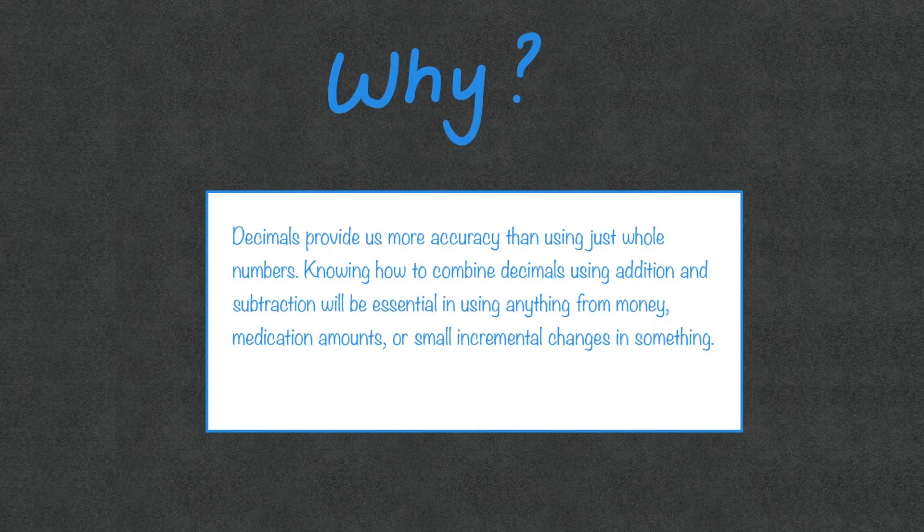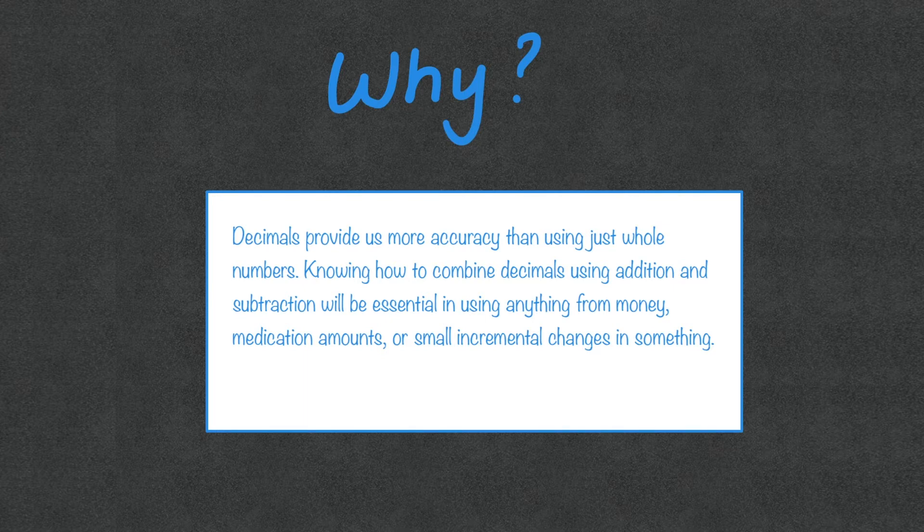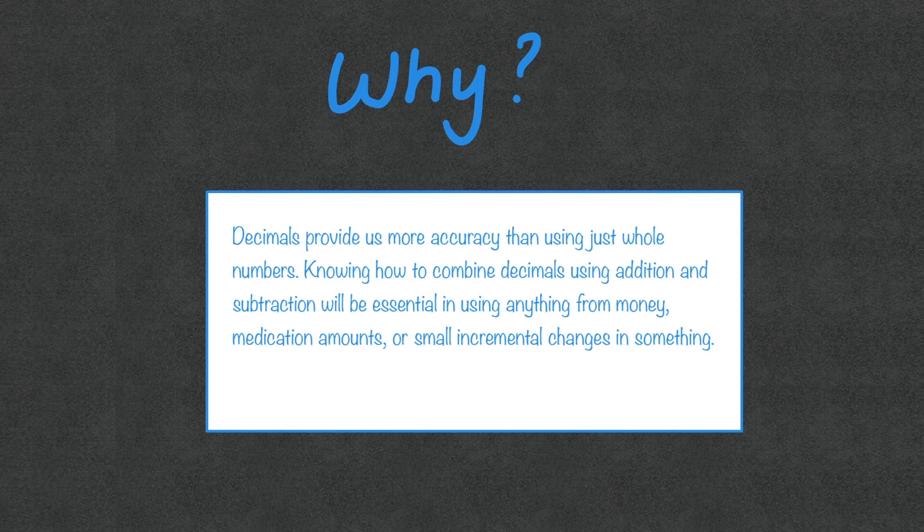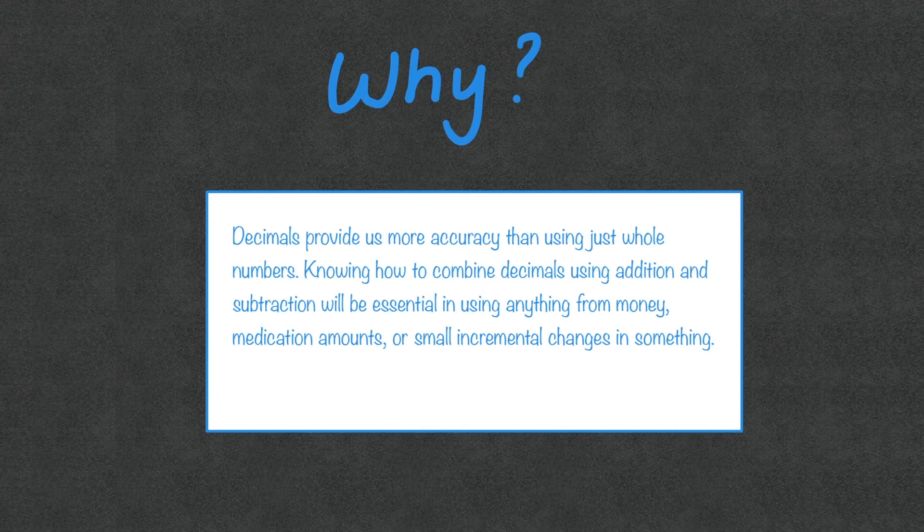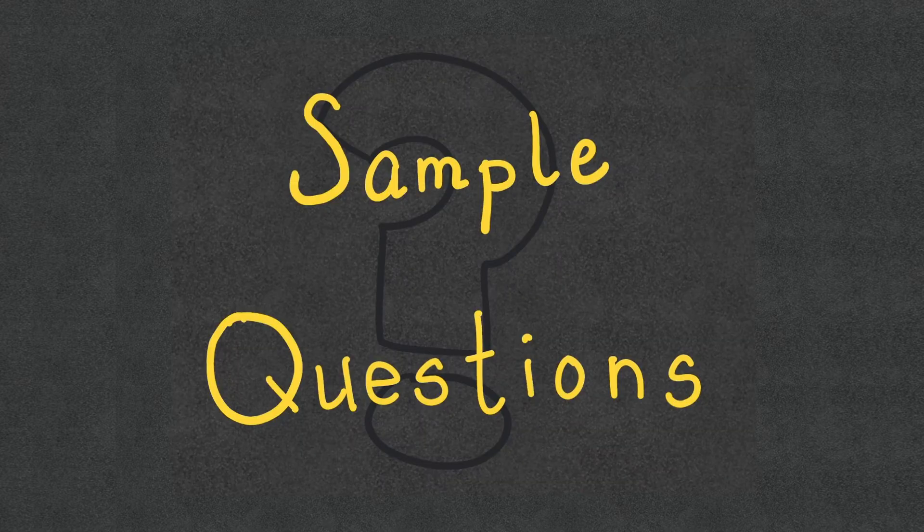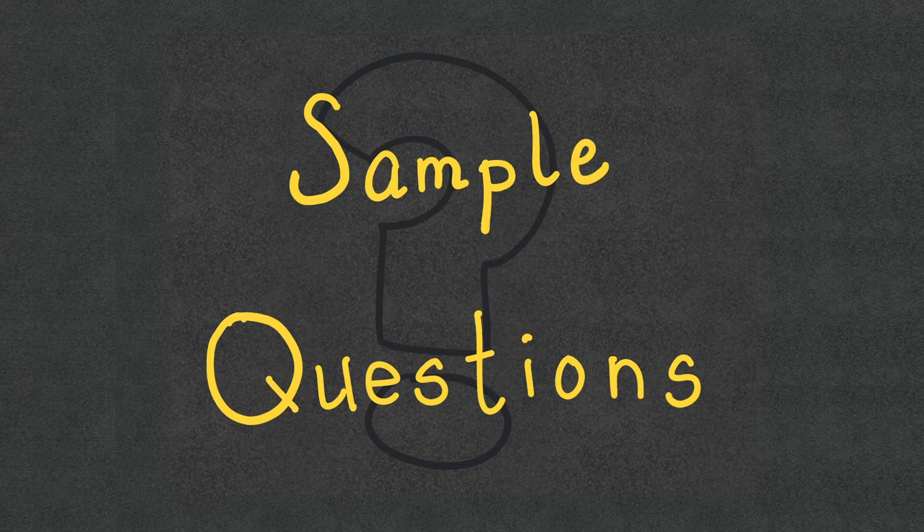So why do we do this? Decimals provide us more accuracy than just using whole numbers. So knowing how to combine decimals using addition and subtraction will be essential in using anything from money, medication amounts, or small incremental changes in something. So imagine same idea if it was how tall you were. You're not just four feet or five feet. You can be somewhere in the middle between those two. So to increase accuracy, we do have this here.